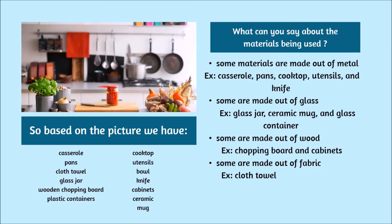Great! Some materials are made out of metal — for example, casserole, pans, cooktop, utensils, and knife. Some are made out of glass — glass jar, ceramic mugs, and glass containers are examples. Some are made out of wood — for example, chopping board and cabinets. Some are made out of fabric — for example, cloth towel.